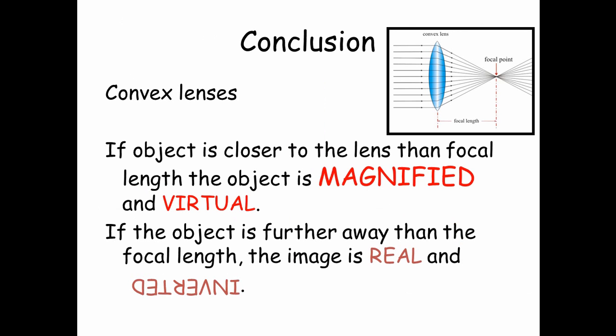So our conclusion, convex lenses: if an object is closer to the lens than the focal length the object is magnified and virtual. If the object is further away than the focal length, the image is real and it is inverted.